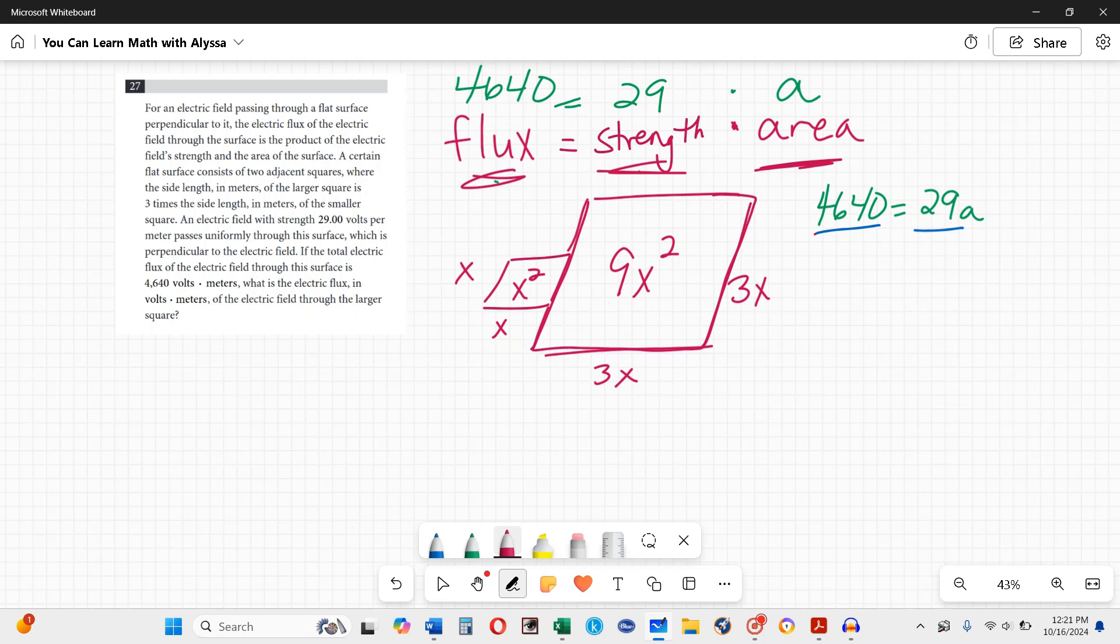This one is x squared and this one is 9x squared. What percentage, portion, proportion of this whole thing is the larger square? The whole thing all together is 9x squared plus x squared, or 10x squared, and the proportion that's the larger square is 9x squared out of that 10x squared.